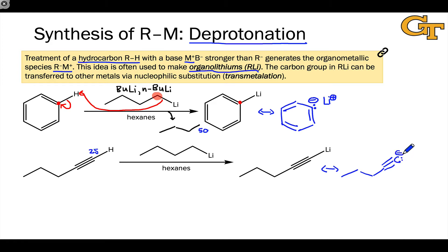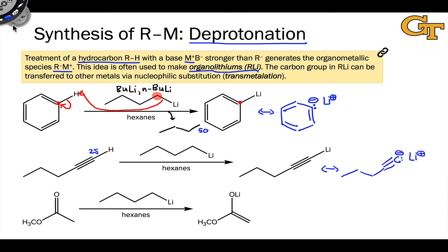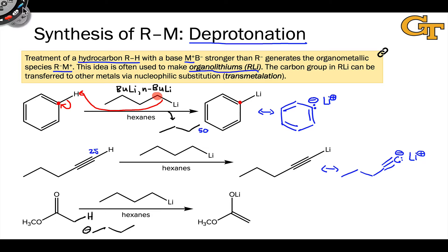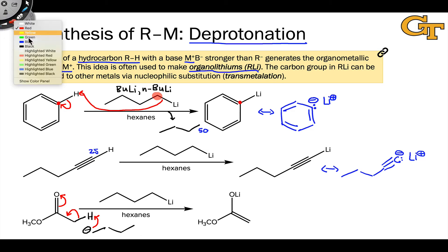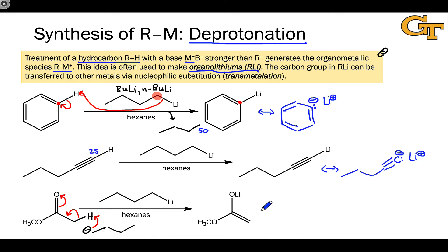We can also use butyllithium to generate substituted organolithiums, like the compound shown on the right. This reaction might look trickier since we end up with lithium on oxygen rather than carbon, but a deprotonation at carbon has taken place — it's just that the anion we generate is resonance-stabilized. We can draw a structure in which the negative charge is shared between carbon and oxygen. The product is called a lithium enolate: we can draw a resonance structure where oxygen is negatively charged, O-Li+, generated by breaking the O-Li bond toward oxygen.